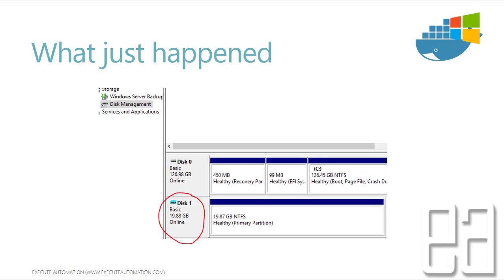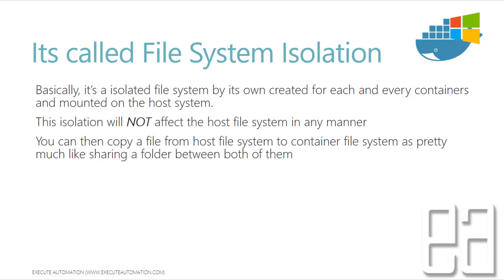So what just happened in our previous video? In part 8 we were actually running a container, and once we ran a container and navigated to the disk management of our machine, we saw a new disk being created as shown here. This disk is related to our container and it's a completely isolated container. We also did a DIR and saw the directories present in that particular container.